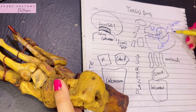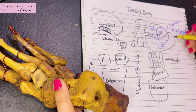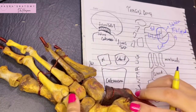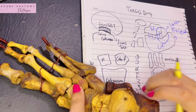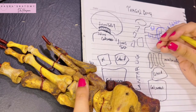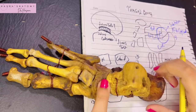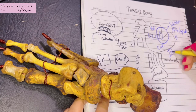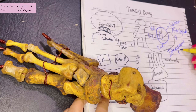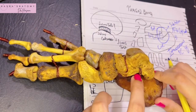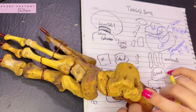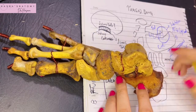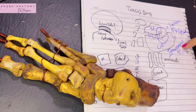The subtalar joint has a fibrous capsule, which almost every joint has. Other ligaments include the medial and lateral talo-calcanean ligaments, the interosseous talo-calcanean ligament, and the cervical ligament. Of all these ligaments, the most important is the interosseous talo-calcanean ligament — the strongest ligament, located in the sinus tarsi more medially, while the cervical ligament is lateral to the sinus tarsi.